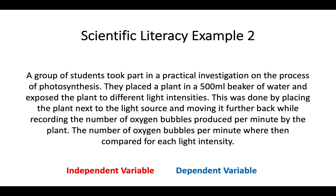This is perhaps a practical you've come across during the photosynthesis part of the course. For the independent variable: they've not used different types of plants, not different volumes — it clearly states 500 ml of water, so that's all the same. What has been changed is the different light intensities — that is the independent variable. For the dependent variable, as the light intensity changed each time, they recorded the number of oxygen bubbles produced per minute. Oxygen is a byproduct of photosynthesis, so it's a good visible indicator. The aim of this experiment would be the effect of light intensity on the number of oxygen bubbles produced per minute.